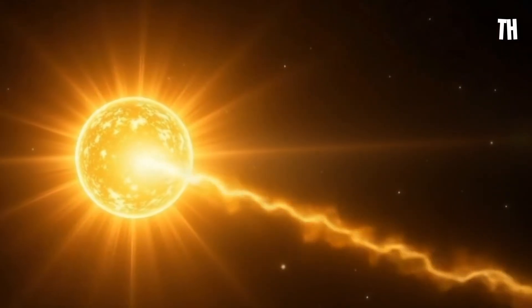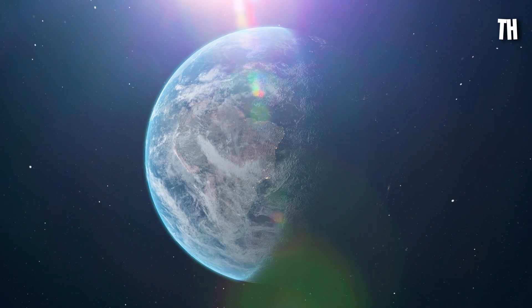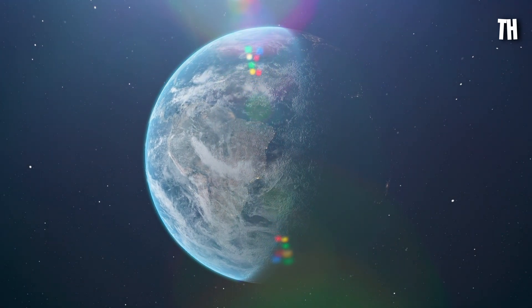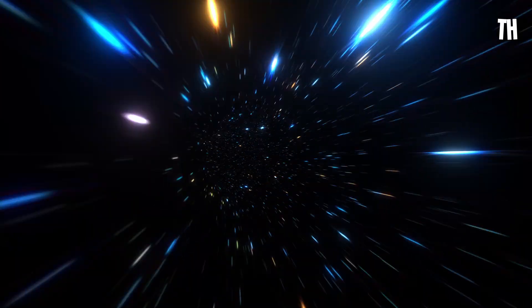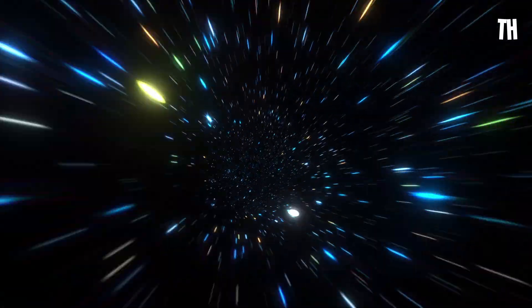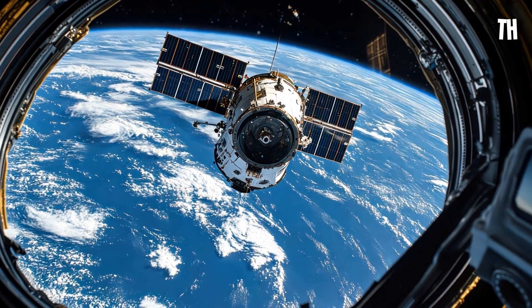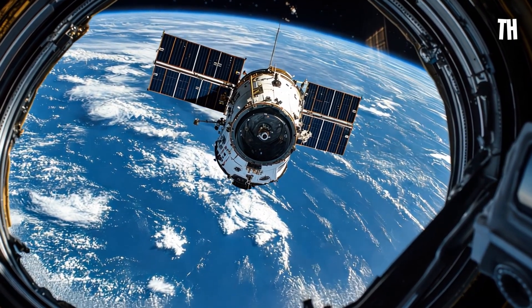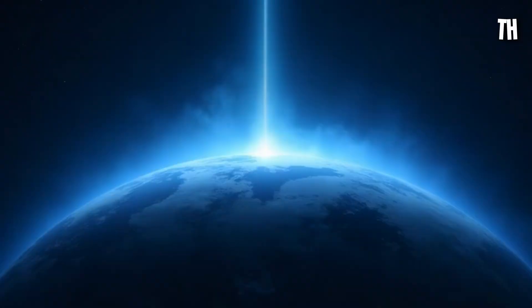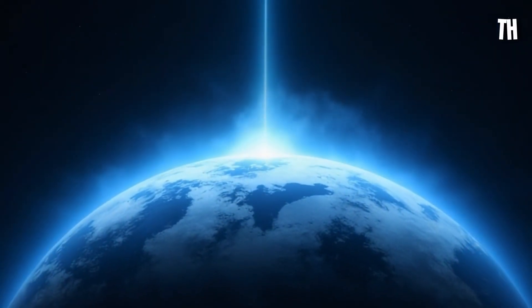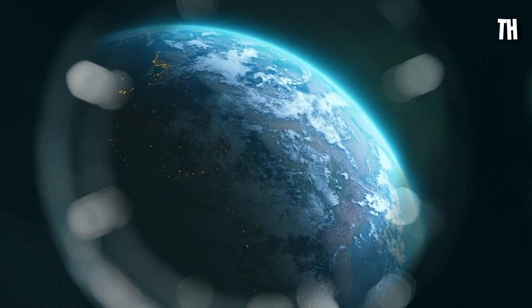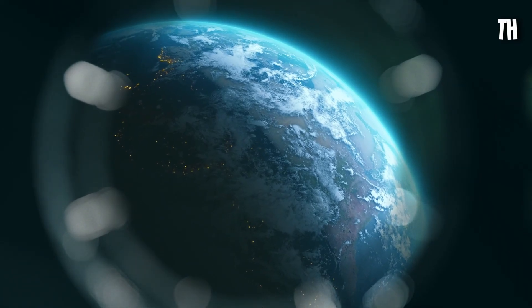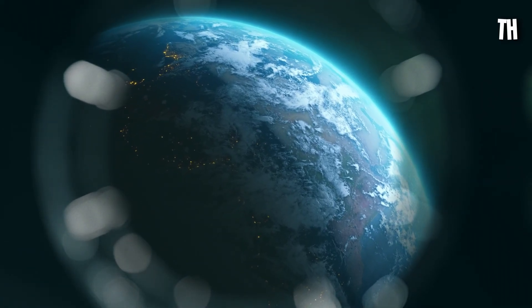And if that beam happens to be pointed directly at Earth, we won't even see it coming. The gamma rays travel at the speed of light. And even today, with all our satellites, we can only detect a gamma-ray burst after it begins. There's no early warning system, no global defense plan. If it comes, we learn about it after it has already struck.